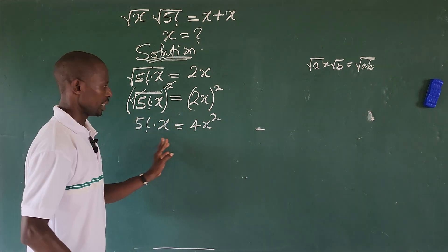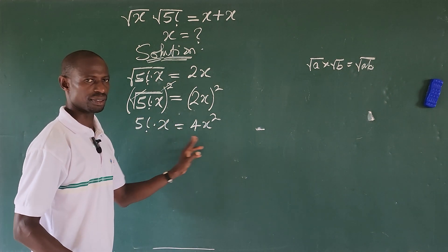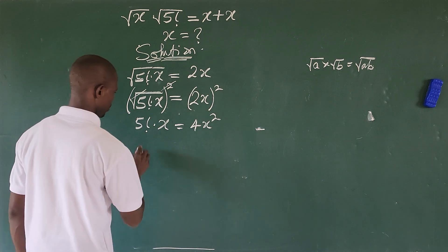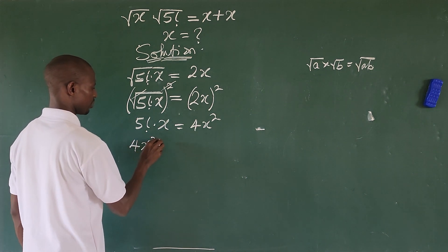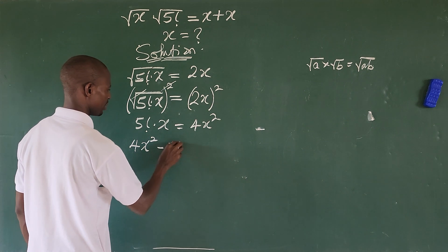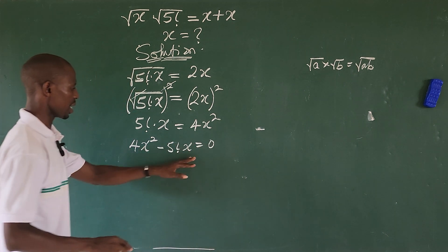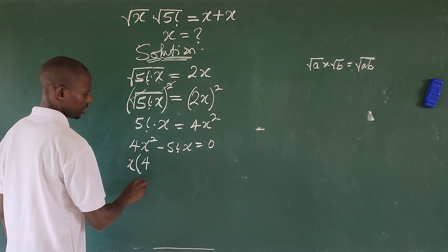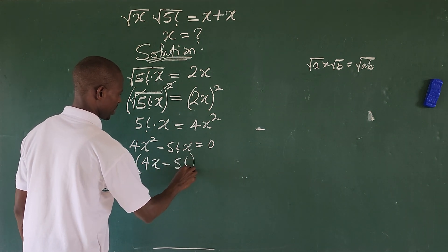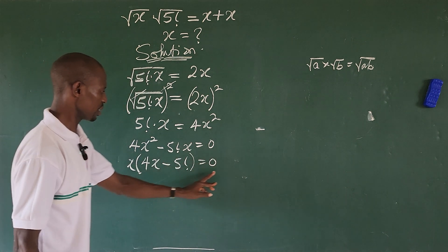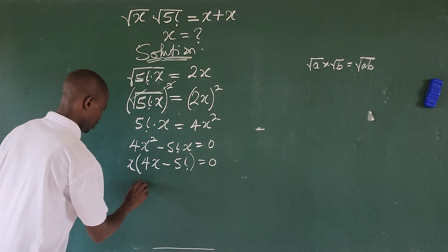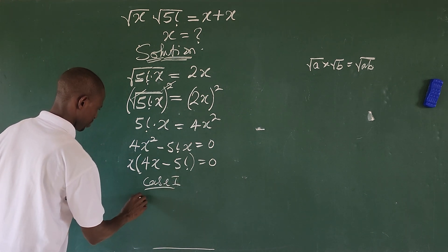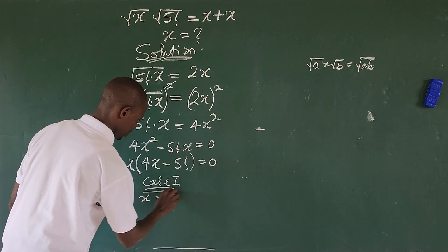Now, rather than dividing both sides — which would give only one root — we move everything to one side: 4x squared minus 5 factorial times x equals zero. Factor out x: x times (4x minus 5 factorial) equals zero. Setting the first factor to zero gives us Case 1: x equals zero.